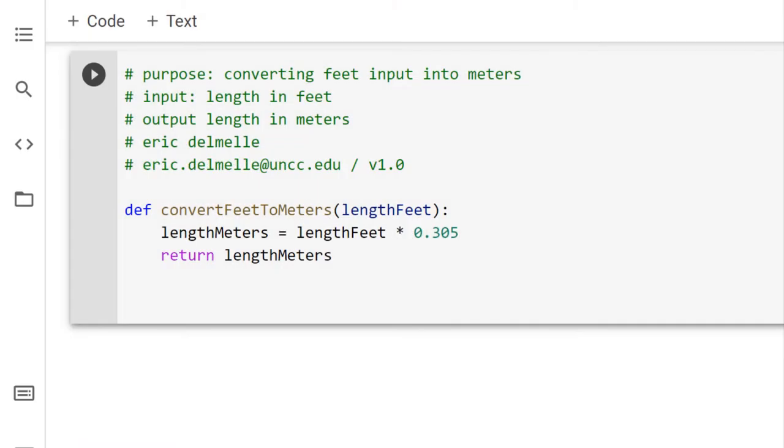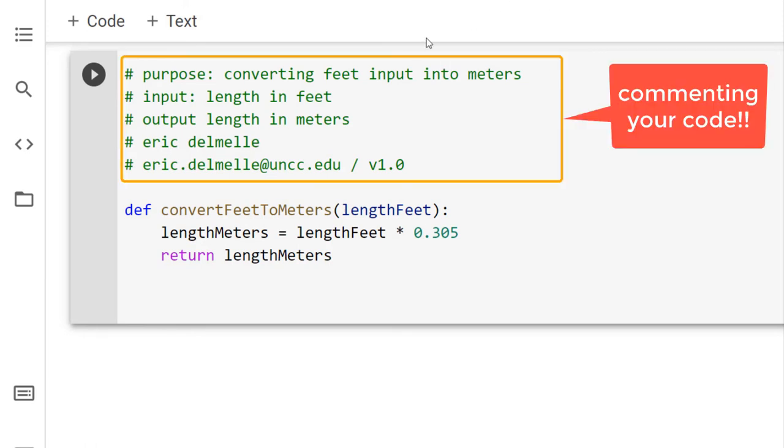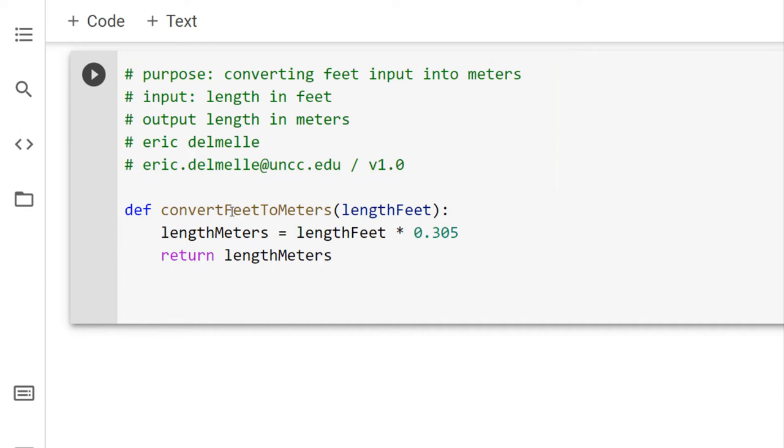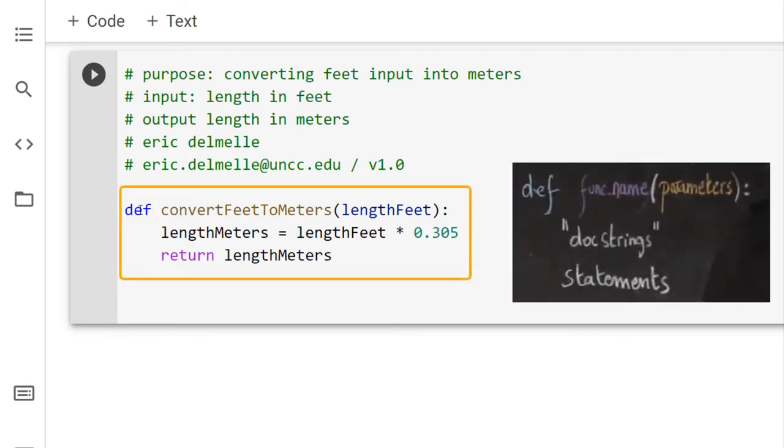Here's an example of a function that converts a value of feet to meters. As you can see here from my screen, I have here a little bit of comment in the top that explains the purpose of the function, its input, its outputs, who wrote it, and then first version. But anyways, let's focus here about how the function is being defined. So, we use this define keyword. As I had mentioned, this is the name of the function. You want to have something that makes sense.